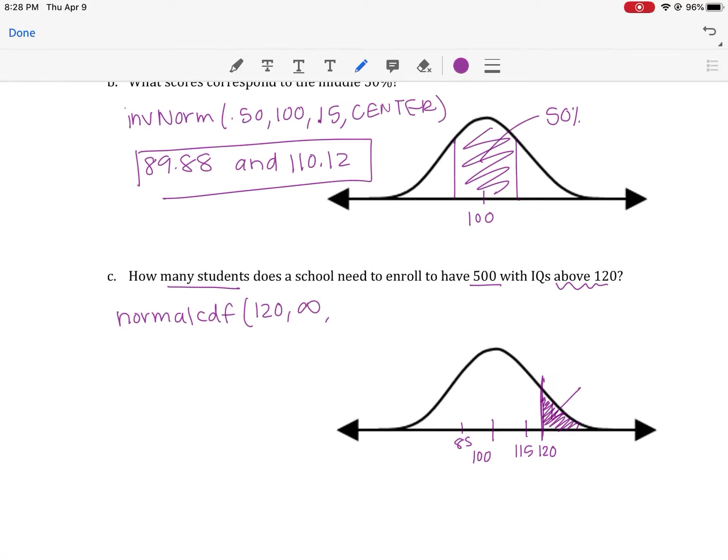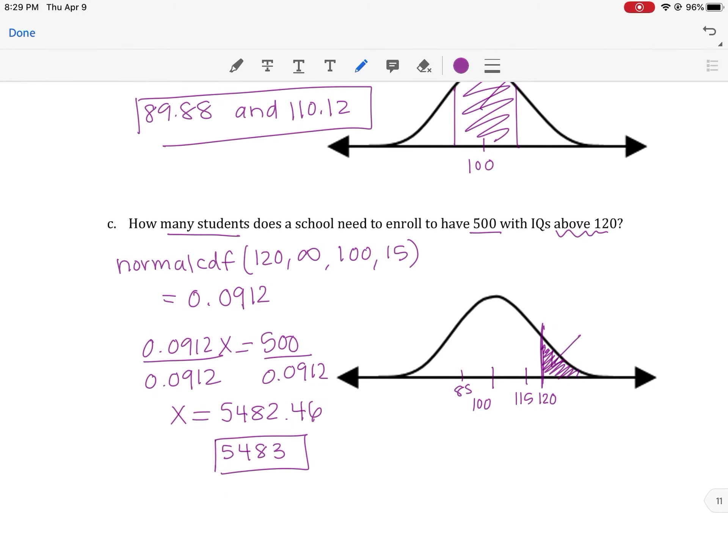So here, as we input our things, this is constituting your work. Oftentimes, we usually just use infinity as the upper bound, and then we put some big number in our calculator. 100 for the mean, 15 for the standard deviation. We end up with 0.0912. But we're really saying 9% of some number, so 0.0912 of some number that I don't know equals 500 kids. If I divide both sides by 0.0912, I end up getting that x is equal to 5,482.46. And the thing here is, if I round that down, like regular rounding would teach me, I would have less than 500. So in this case, we do need to round up to 5,483 students.